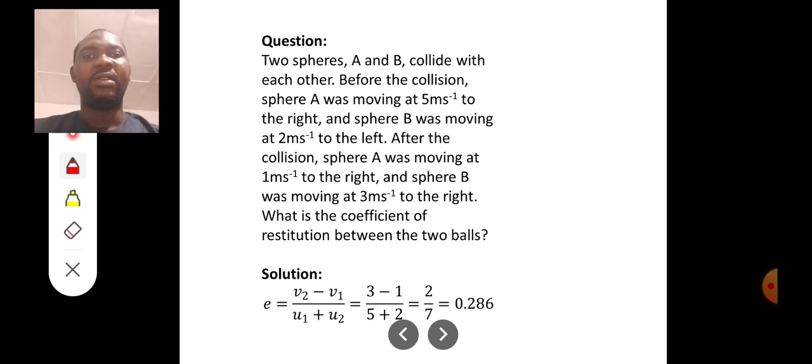After the collision, sphere A was moving at 1 meter per second to the right. Sphere B was moving at 3 meter per second to the right. Same direction. What is the coefficient of restitution between the two balls?